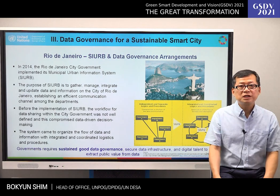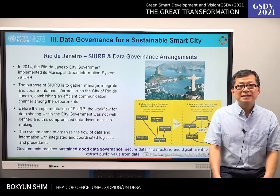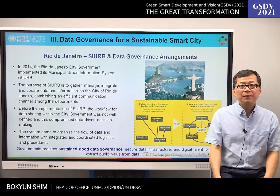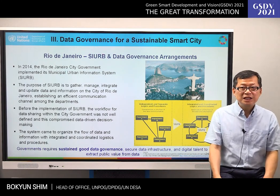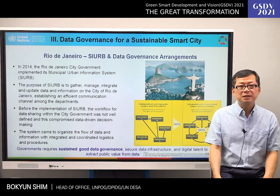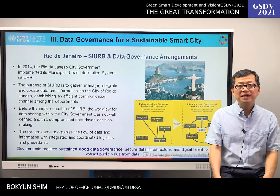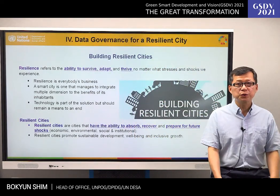This is a case study on the municipal urban information system implemented in 2014 by the Rio de Janeiro city government in Brazil. The purpose was to gather, manage, integrate, and update data and information on the city, establishing an efficient communication channel among departments. Before its implementation, the workflow for data sharing within the city government was not well defined, which compromised data-driven decision-making. The system came to organize the flow of data and information with integrated and coordinated logistics and procedures. Data governance is very essential for building resilient cities.